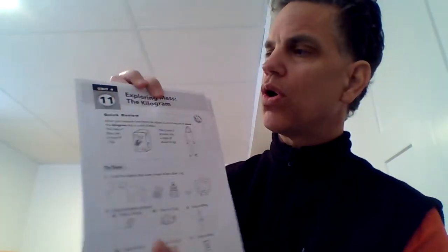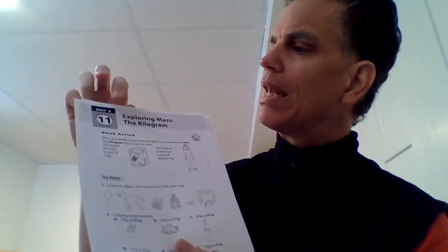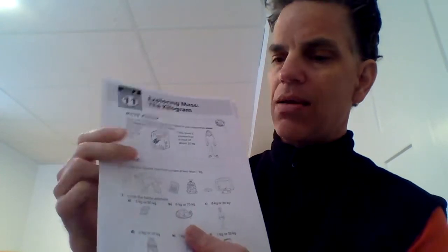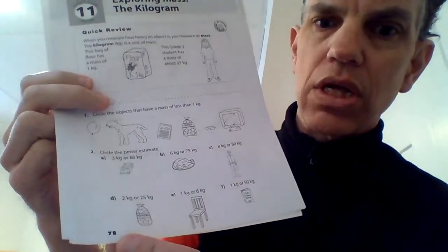So we will be doing lots with kilograms and grams, but for now let's get to our page. We're always measuring things with numbers as well, and we are on unit number four, still all about measuring. Lesson eleven and page seventy-eight. Seven tens, eight ones. So exploring mass: the kilogram.